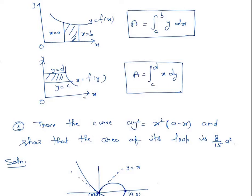Similarly, if the curve is of the form x = f(y) and the lines are parallel to the x-axis, say y = c and y = t, then the area bounded by x = f(y), lines y = c, y = b, and the y-axis is given by the integral from c to d of x dy. These two formulae you have already studied in class 12th.